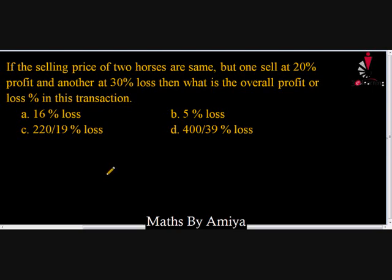Today we try to solve a question using the shortest method that saves time. The question is: the selling price of two horses is the same — one sold at 20% profit, another at 30% loss. So we have to equate the selling prices.